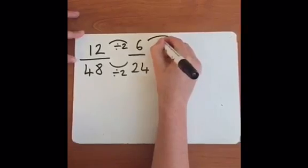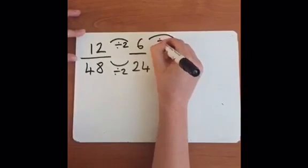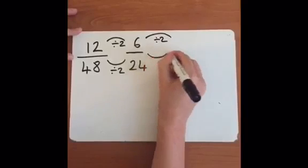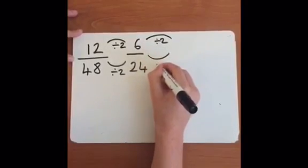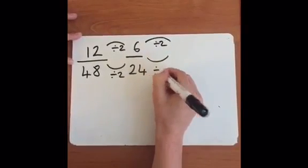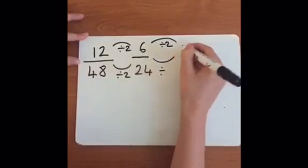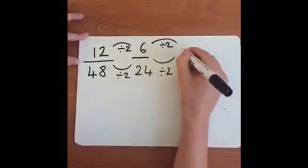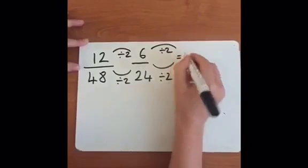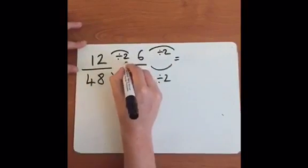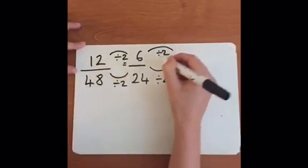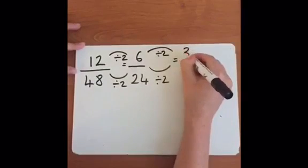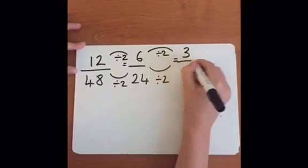Now as you can see, they are both still even numbers, so we can do it again. We're going to divide both by 2, or half them. So 6 divided by 2 and 24 divided by 2. So 6 divided by 2 is 3, and 24 divided by 2 is 12.